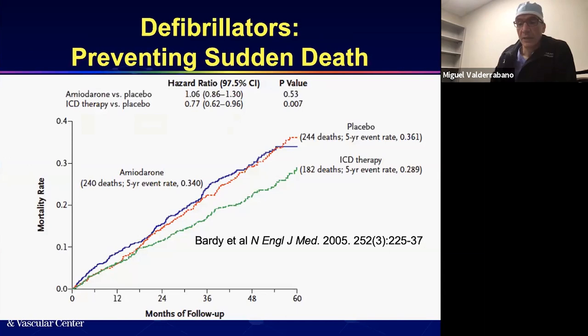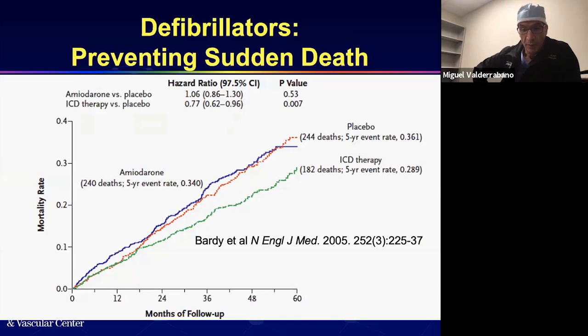These patients need defibrillators. An ICD is a must in patients with decreased ejection fraction — not to treat ventricular tachycardia, but to prevent sudden cardiac death. Compared to placebo, ICD therapy has lower mortality, and compared to amiodarone it also has lower mortality. You have to have the background of an ICD in this patient.